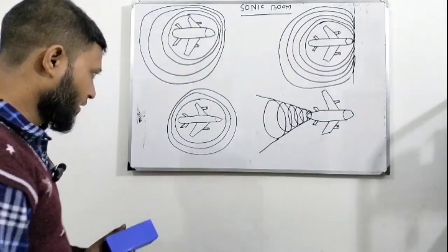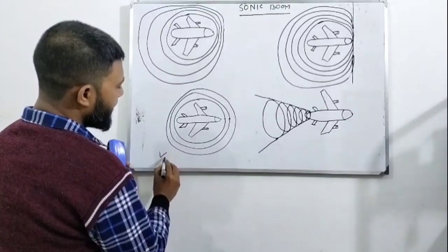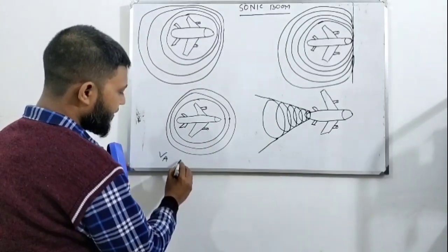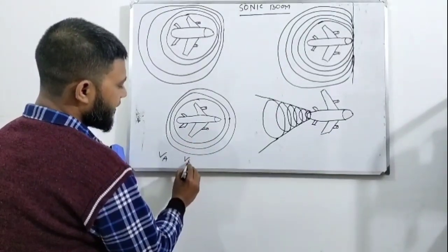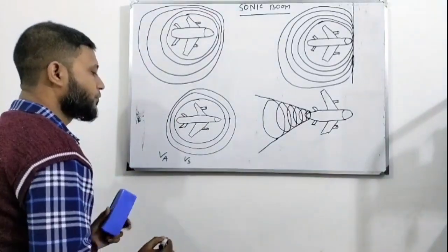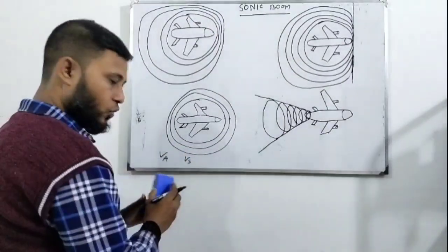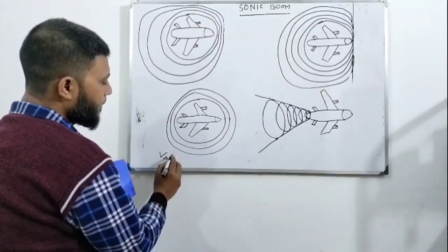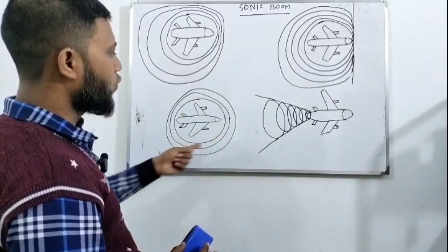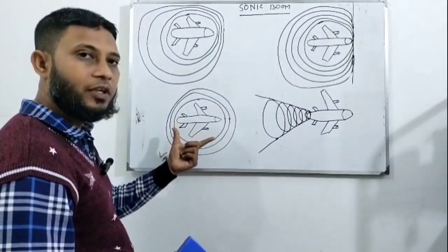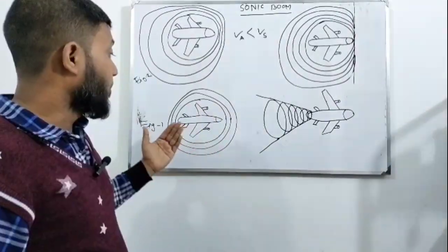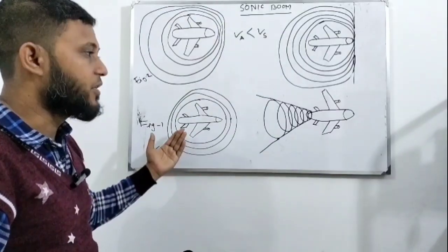To understand this topic, first we think VA is denoted by the speed of aircraft and VS is denoted by the speed of sound. At first, we just think VA equal to 0. At that time, sound wave will be created in this way. That means, all waves created in equal distance. For better understanding this topic, let us see a video clip.